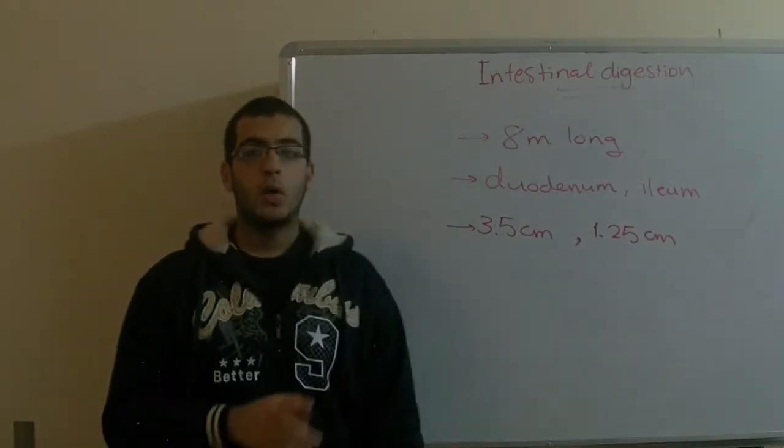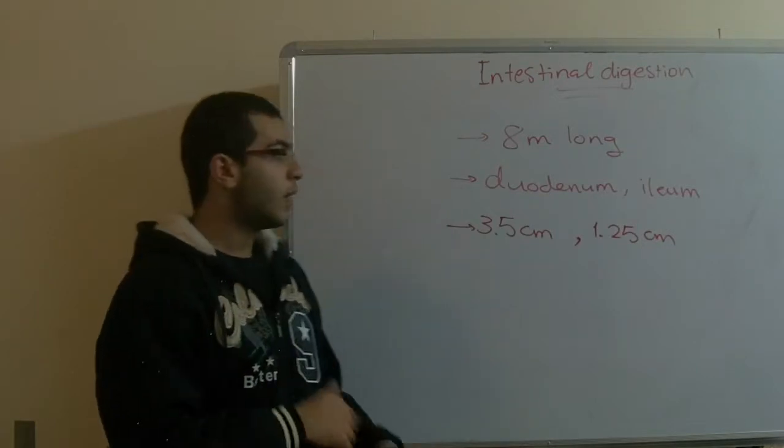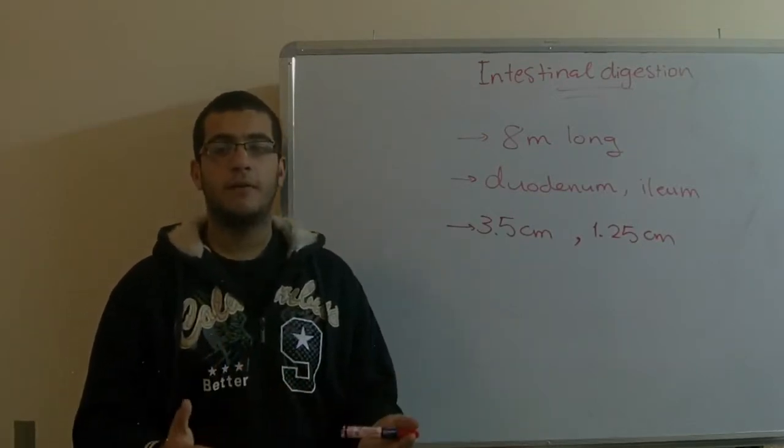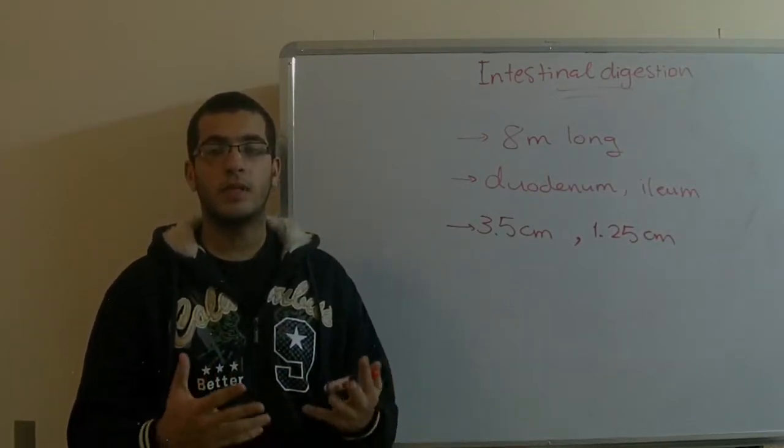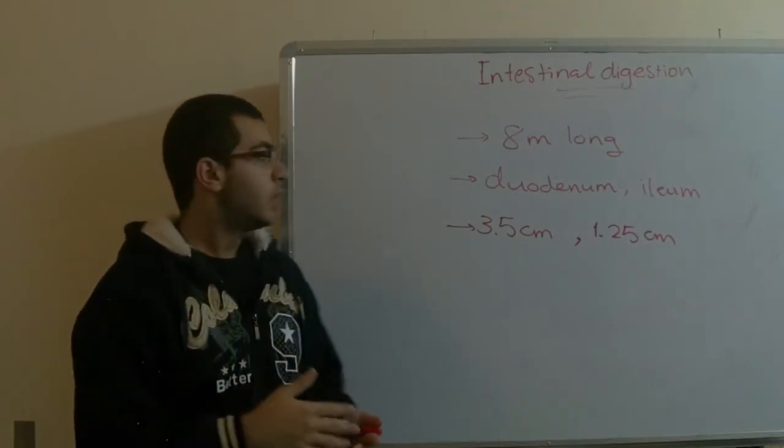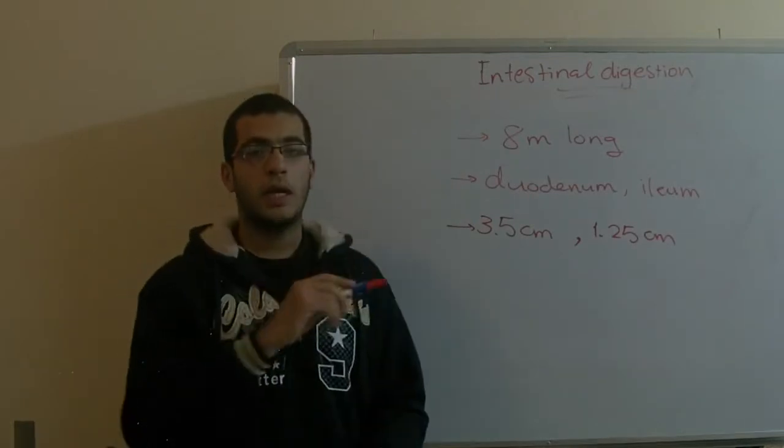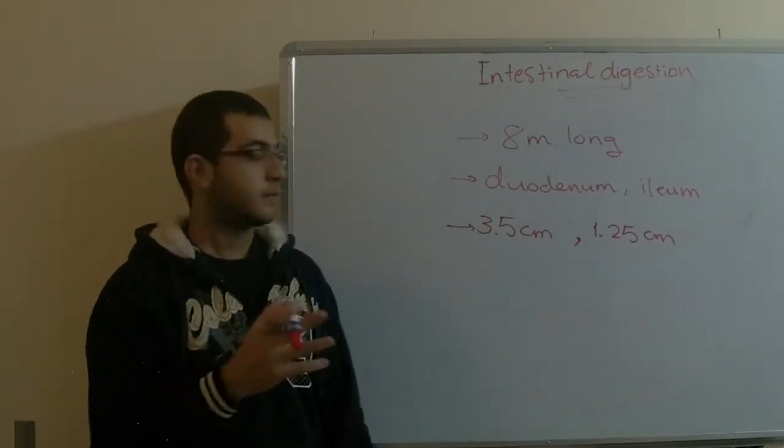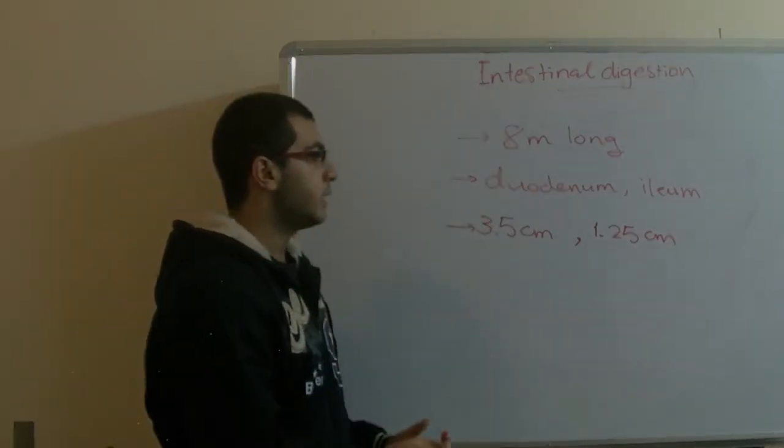They coiled and looped around themselves by means of connective tissue which is called the mesentery. That connects the parts of the small intestines together so that they are coiled and looped around themselves and they are enclosed in this membrane.